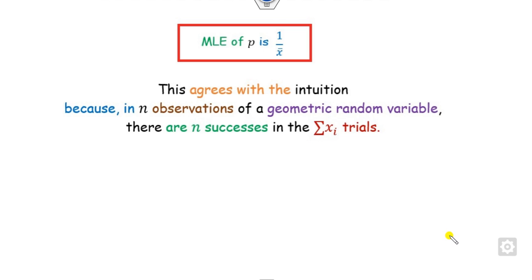Does this agree logically? This agrees with the intuition that when you have n observations of the geometric random variable, there are n successes in them.